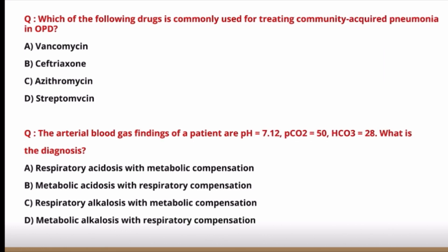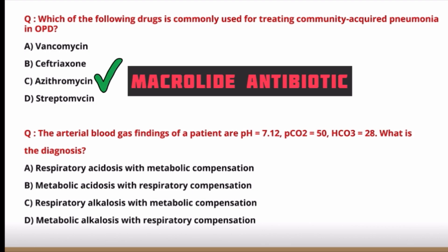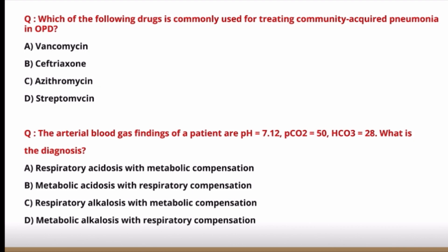Next question: which drug is commonly used for treating community-acquired pneumonia on OPD basis — vancomycin, ceftriaxone, azithromycin, or streptomycin? Vancomycin is reserved for MRSA; ceftriaxone is an IV drug used in IPD patients; streptomycin is not used for CAP. Oral azithromycin is commonly used for CAP on OPD basis — the correct answer is azithromycin.